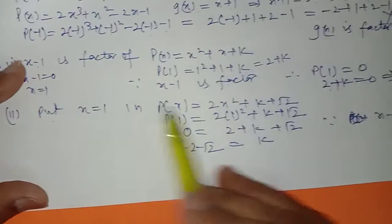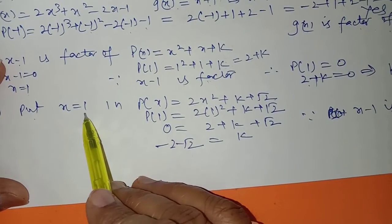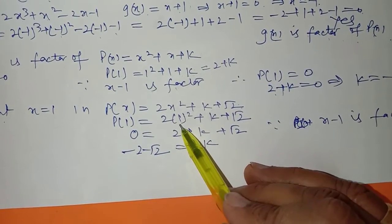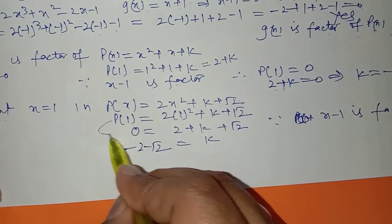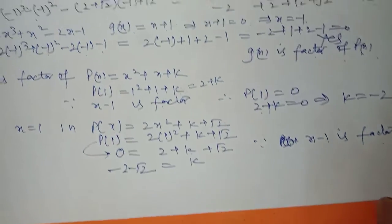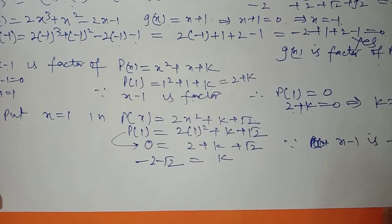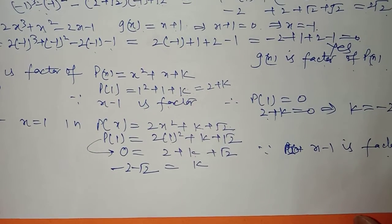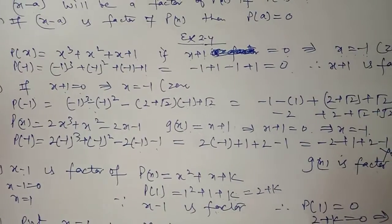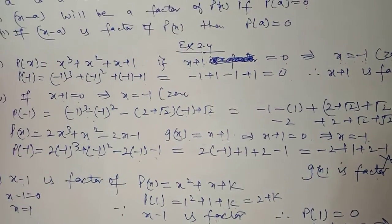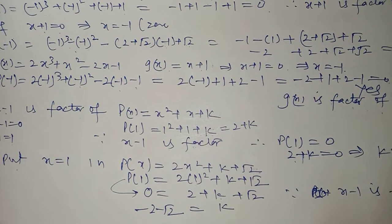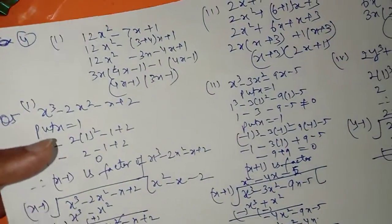Similarly, in the second part, (x − 1) is again a factor of the polynomial. Put the divisor equal to 0 to get x = 1. Replace x by 1 in the polynomial — we get 2 + k + √2. Since (x − 1) is given as a factor, set this equal to 0. Therefore k = −2 − √2. This is the essence of the factor theorem: find the remainder, and if a factor is given, set the remainder equal to 0 to find the unknown value.